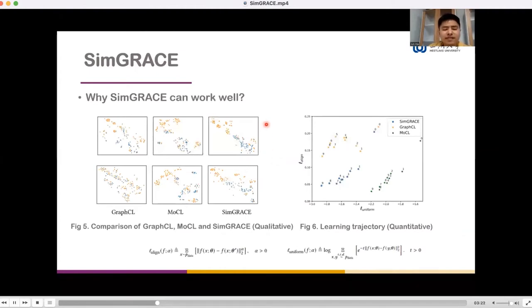In order to understand why SimGRACE can succeed, we provide both qualitative and quantitative analysis. It can be observed the samples of two classes are distinguished by colors blue and orange. We first train three GNN encoders with these methods respectively and visualize the representations of the original graph with t-SNE in the upper row. Then we perturb the graphs or encoders in their respective way and visualize the representations of the original graph in the lower row. Unlike GraphCL, SimGRACE and MOCL can preserve class identity semantics well after perturbations. However, MOCL requires expensive domain knowledge as guidance.